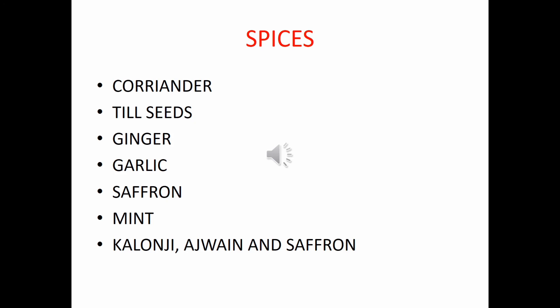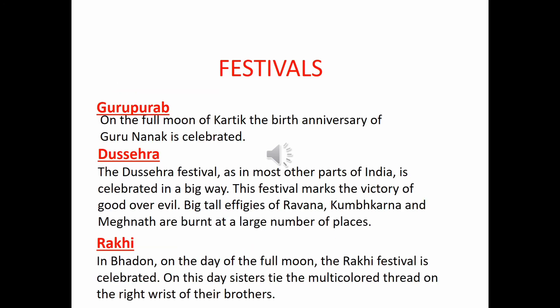Now coming to the festivals celebrated in this region. These include Guru Purab, celebrated on the full moon of Kartik — the birth anniversary of Guru Nanak. Then Dashera, which is very popular across North India. Then Rakhi, where sisters tie a multicolored thread on the right wrist of their brothers. During Baisakhi, Punjabi people make kheer, malpua, and churma. Other festivals include Guru Nanak Jayanti, Holi, and Lohri — during Lohri, people make rohdi kheer, which is sugarcane juice kheer, and akhrot ki kheer. Then Karwa Chauth.